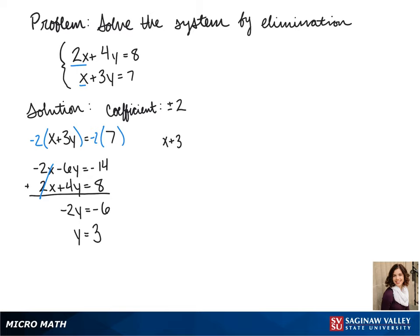Now we plug 3 into one of our equations to solve for x. So x plus 3 times 3 equals 7. x plus 9 equals 7. So we subtract 9 from each side, and x equals negative 2. So the solution to our system is negative 2, 3.